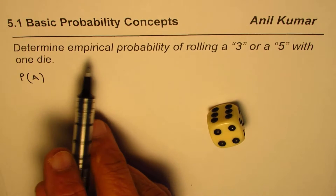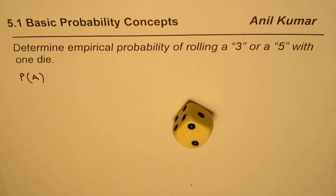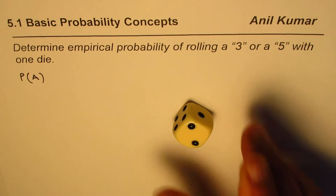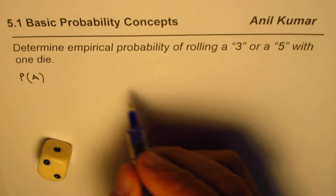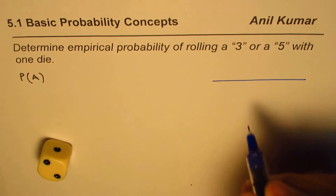When we do experimental probability, we actually work with the die. We have to roll the die and see the number we get. Once we get that number, we make a record. At the end, we see how many of those were in favor of the event we wanted out of the total number of trials. To do that, we need to make a table.